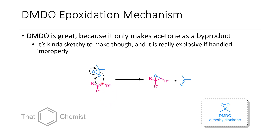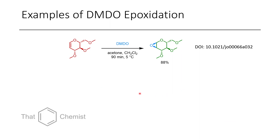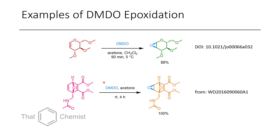For the DMDO mechanism, the alkene attacks at this oxygen, the CO electron density attacks back, and this forms acetone as the byproduct. Some examples of DMDO-mediated epoxidation include the epoxidation of a glycal derivative in 88% yield. Another example was the selective epoxidation of the electron-rich alkene in the presence of an electron-poor Michael acceptor, taken from a patent.